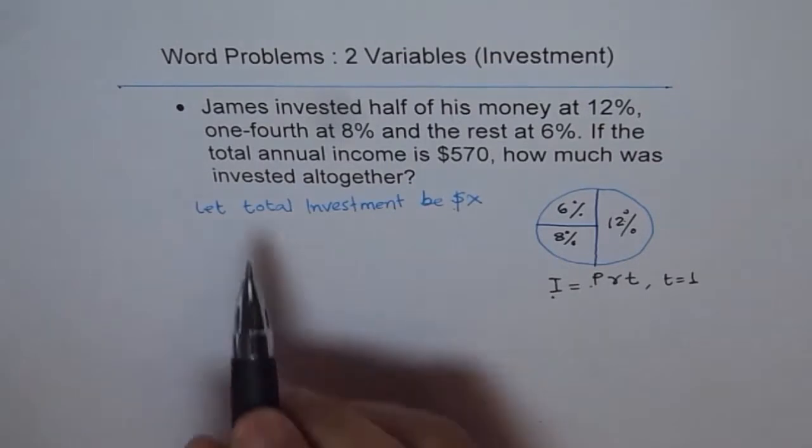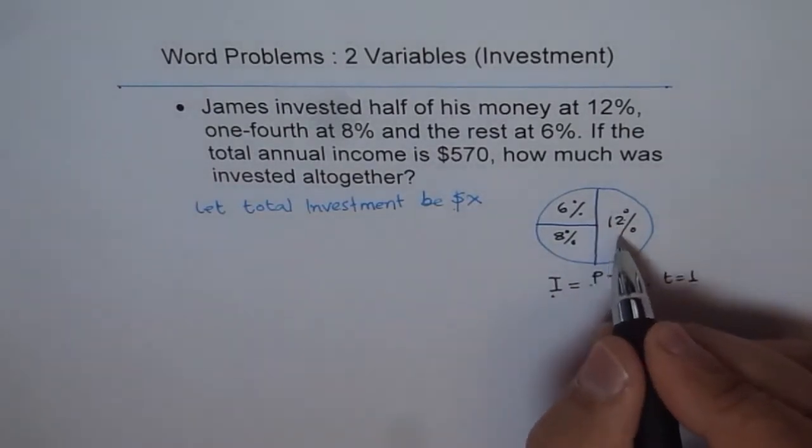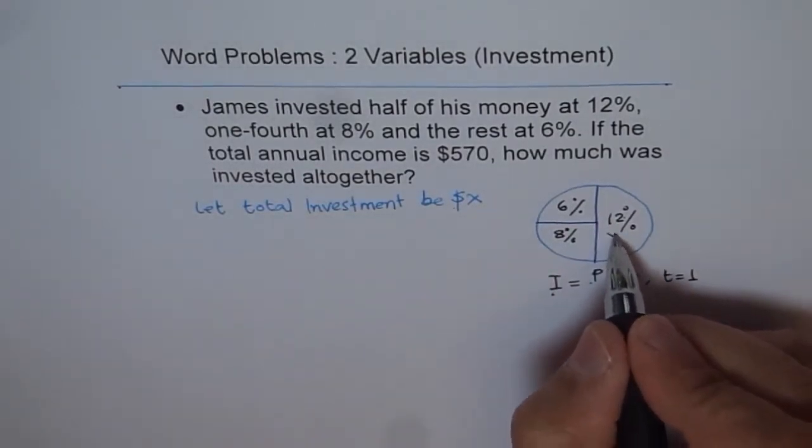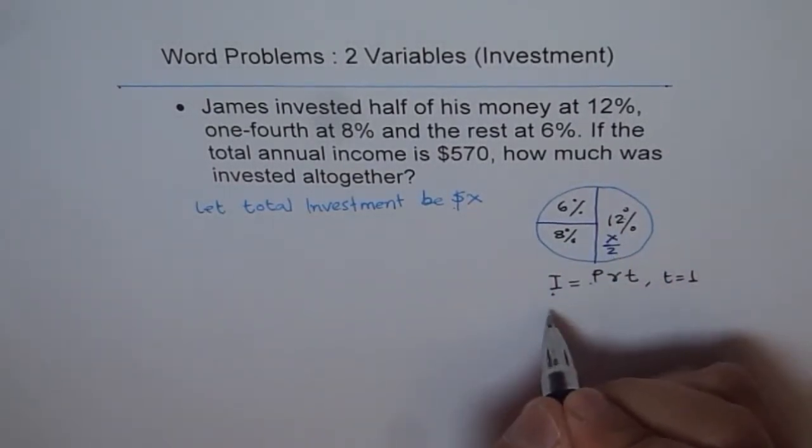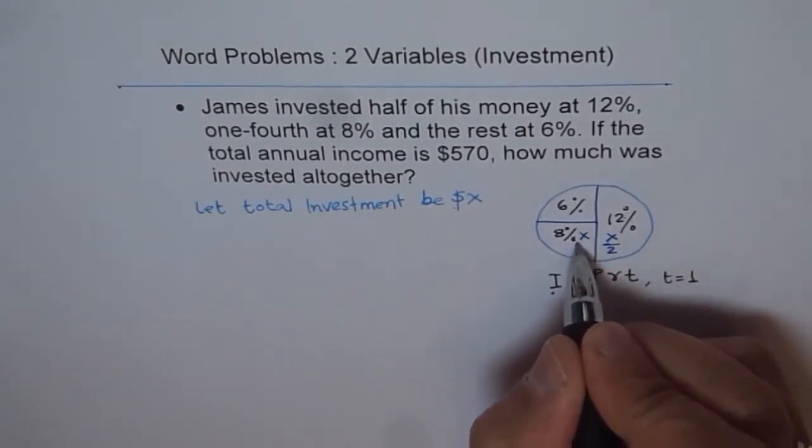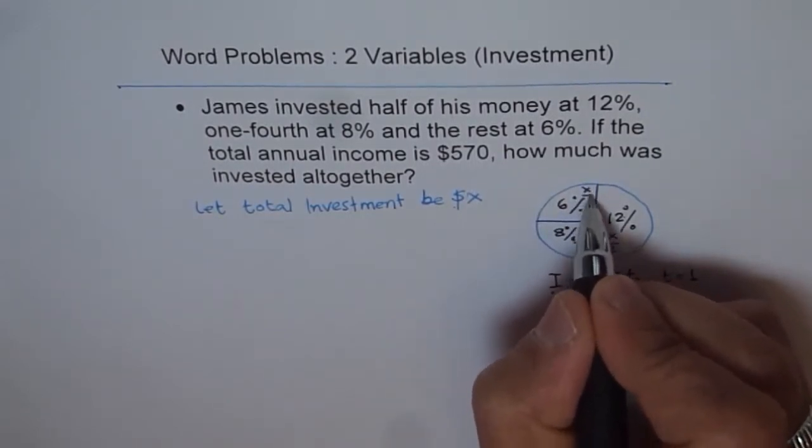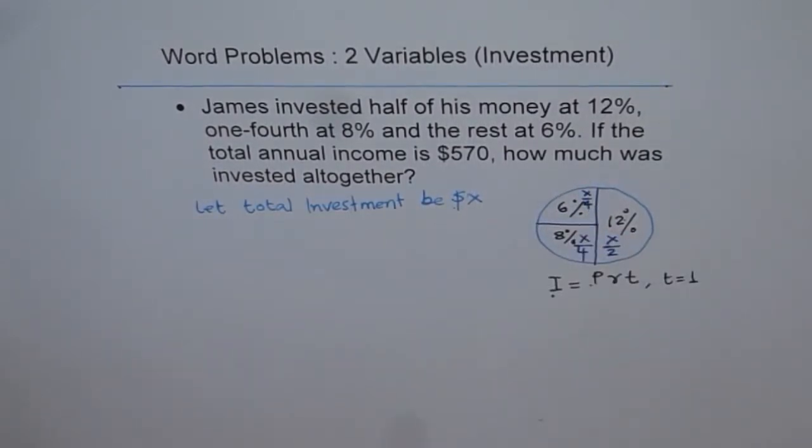Total investment earns $570. So let us now make an equation. If X is the total amount, then the amount invested at 12% is how much? Half of X. Amount invested at 8% is quarter of X.